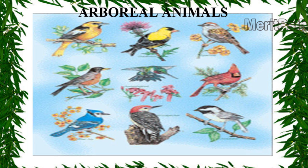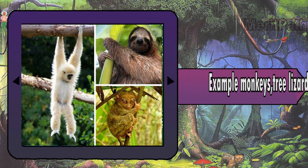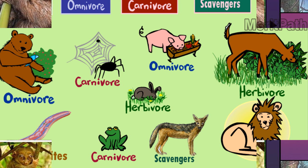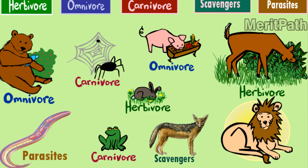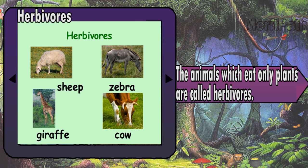The animals which spend most of their time on trees are called arboreal animals. Examples: monkeys, tree lizards, etc. Based on their food habits, animals are classified as herbivores, carnivores, omnivores, scavengers, and parasites.